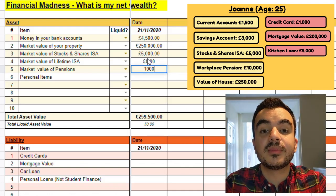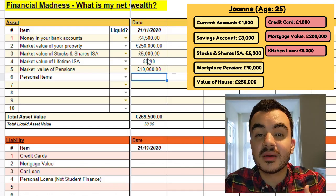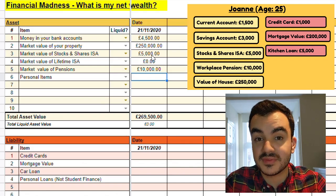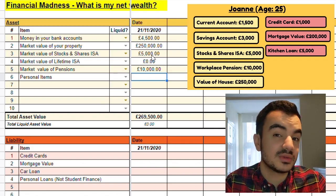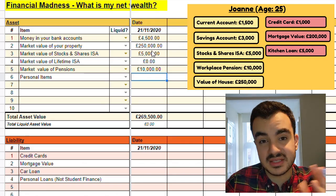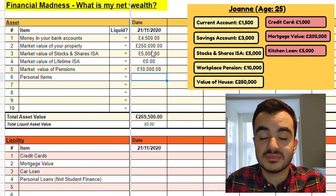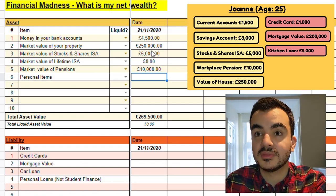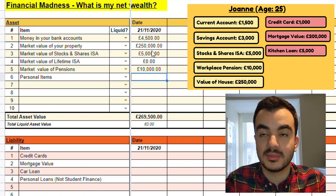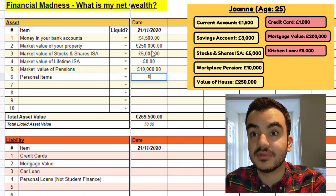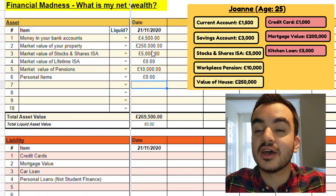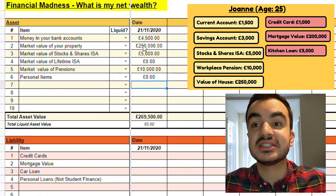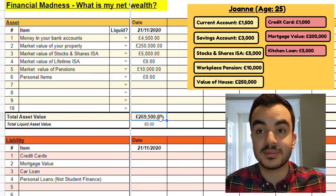The last example is personal items — these can be examples where we can sell personal items of ours at a really high value, such things as jewellery, gold, et cetera. She doesn't have this so I'm just going to leave that blank or put a zero. Now we can see at the bottom of this table that her total assets are just under £270,000.